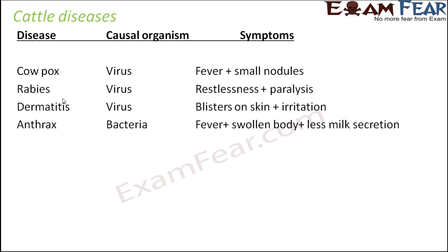Anthrax is very commonly seen in cattle. The animal normally has fever, a swollen body, and reduced milk secretion — cows and buffaloes suffering from anthrax do not give much milk. Black leg's causal organism is also bacteria, and its symptom is fatal toxemia, which can result in the death of the animal.